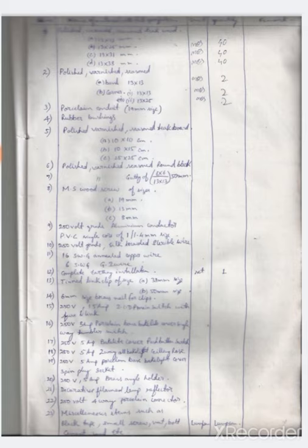Polished seasoned teak wood board of 10 by 10 cm, 10 by 15 cm, 25 by 25 cm, and 13 by 25 mm. Rubber bushings, porcelain conduits, polished varnish seasoned round block guti of 6 by 6 by 13 by 13 into 50 mm.